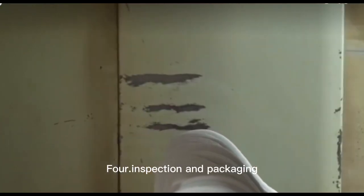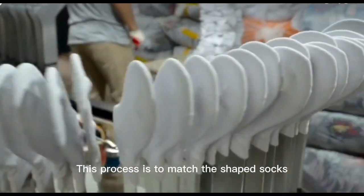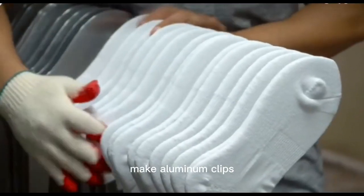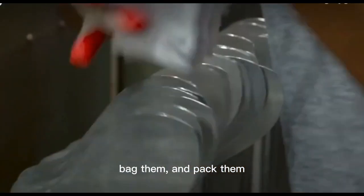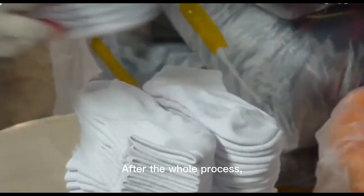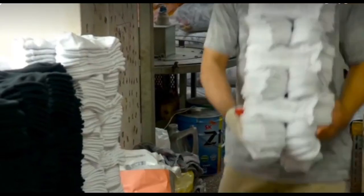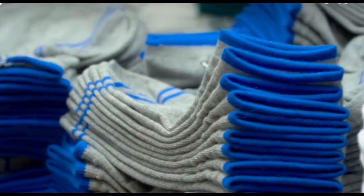For inspection and packaging, this process is to match the shaped socks, make aluminum clips, order labels, hook them, bag them, and pack them. After the whole process, the socks are produced in this way.